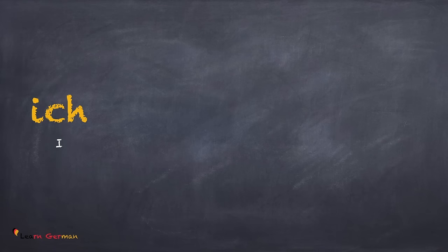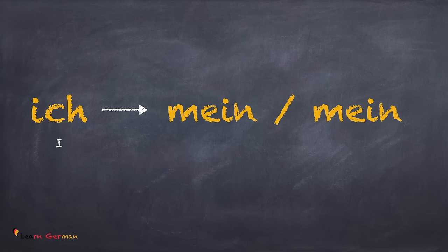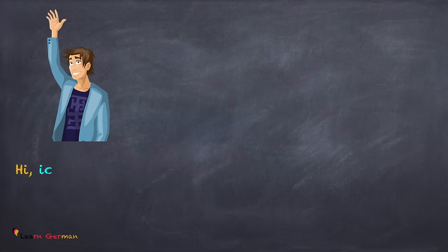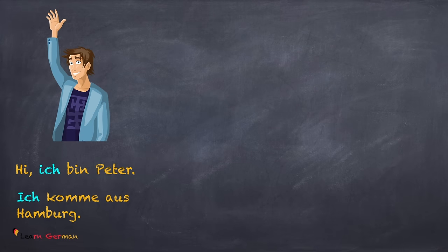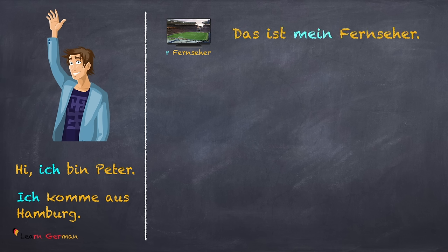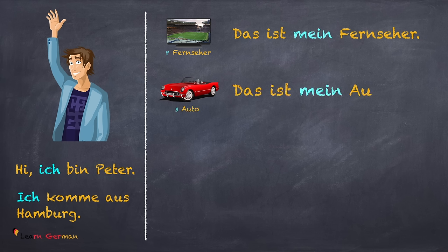Let's do the first one. The pronoun is 'ich' and the possessive Pronomen in Nominativ are 'mein' or 'meine.' Whenever the article of the noun is 'der' or 'das,' you use the possessive pronoun 'mein.' For example: Das ist mein Auto. For nouns with article 'das,' we use the possessive article 'mein.'